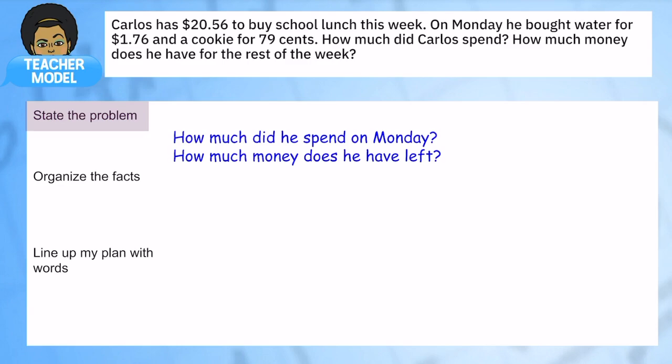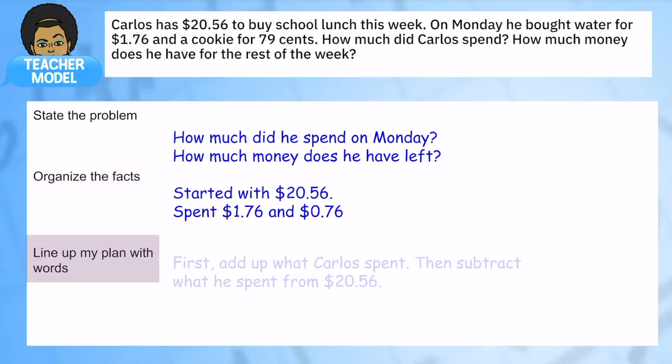Here are the facts in the problem: I know he starts with $20.56, and we know how much he spends—he spends $1.76 and 79 cents. So those are the facts that I've annotated out. What is my plan going to be? I want to figure out how much he spent on Monday, so first I'm going to add up what he spent, and then I'm going to subtract that from $20.56. So that is my plan.